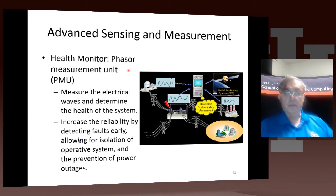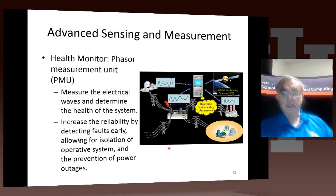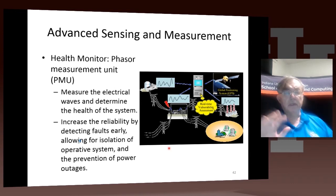Here's a more technical device — a health monitor called a phasor measurement unit, which measures the electrical health of the system, detects faults early, isolates faulty systems, and prevents unnecessary power outages. This is the type of thing that would have prevented the Northeast power outage — not the original outage, but the cascade effect.